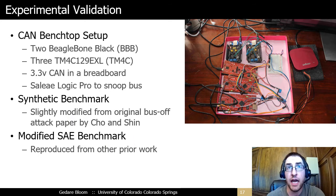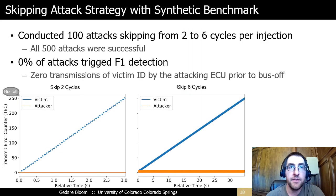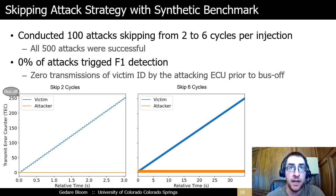I implemented the attack prototype using a five-node CAN benchtop setup. Two of the nodes are BeagleBone Black boards running Linux, and three of the nodes are TM4C129 boards running custom bare-metal code. The CAN bus is implemented on a breadboard and snooped with a Saley Logic Pro. Two scenarios are used to evaluate the approach: first, a synthetic three-node benchmark from the original bus-off paper reproduced and slightly modified; second, a modified SAE benchmark used in several prior efforts, adopted to evaluate the attack in a more complex prototype before attempting it on a real car. I evaluated Weeping CAN with the skipping attack strategy on the synthetic benchmark: 500 attacks were conducted, 100 each skipping between two to six cycles. All of the attacks were successful, and none exhibited feature F1.